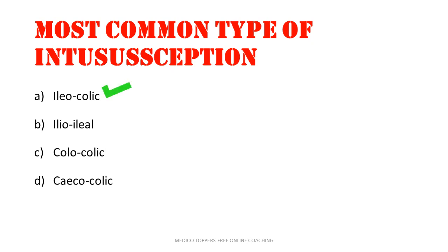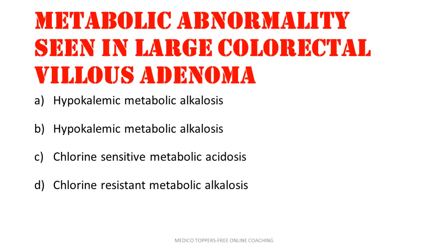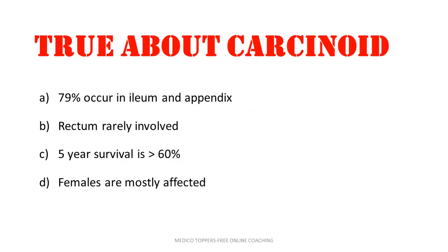True about carcinoid: 79% occur in ileum and appendix, rectum is rarely involved, 5-year survival is more than 60%, females are mostly affected. The answer is females are mostly affected in case of carcinoid syndrome.